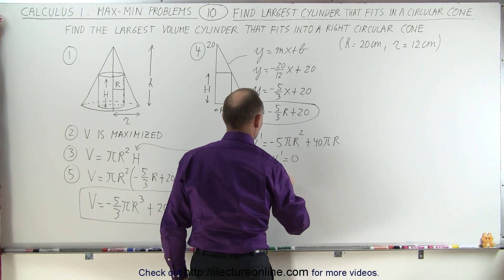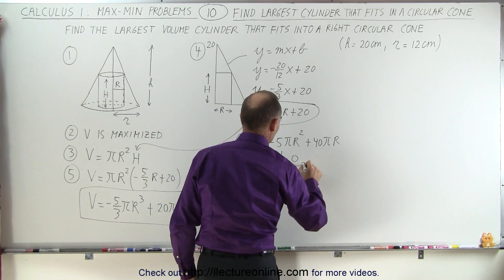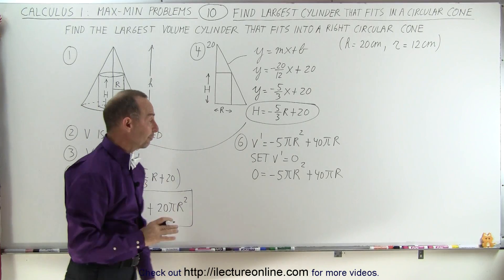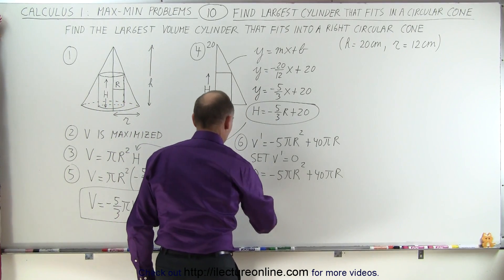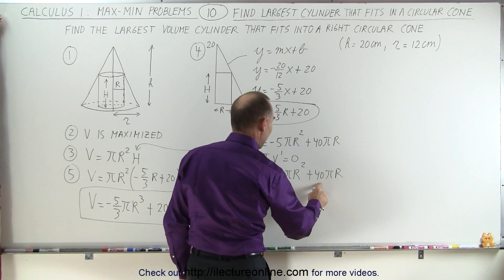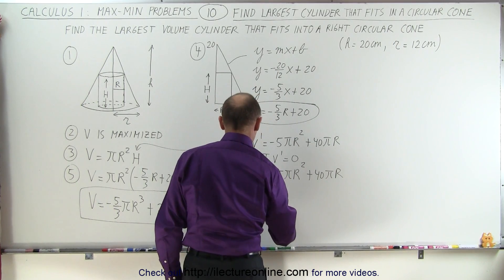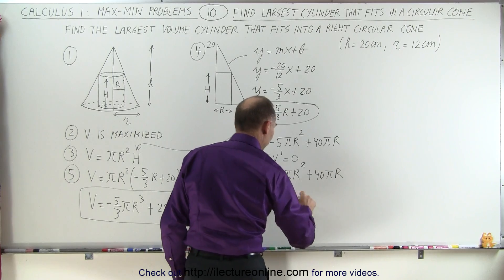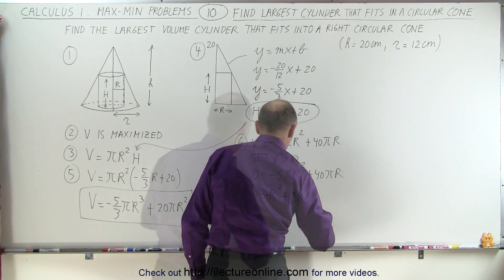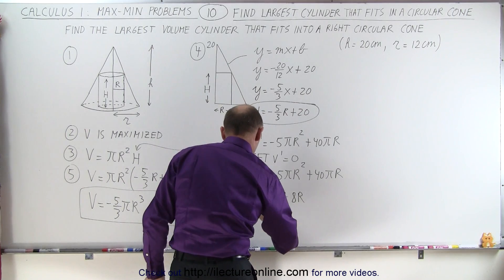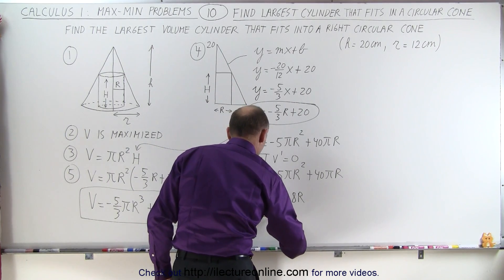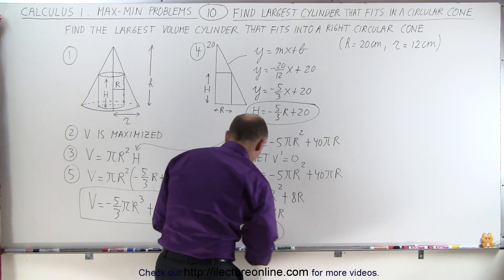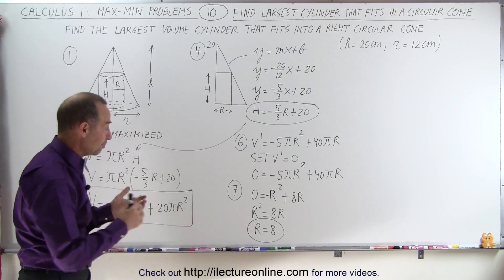Setting V prime equal to zero gives zero equals minus 5 pi R squared plus 40 pi R. Dividing both sides by 5 pi, we get zero equals minus R squared plus 8R. Moving terms gives R squared equals 8R, and dividing both sides by R gives R equals 8. So the radius of the cylinder must equal 8.